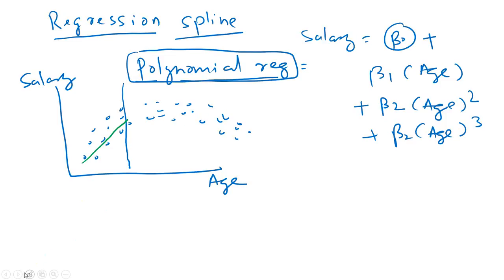In the second section, the data is more of a constant — parallel to the x-axis — so you can fit a straight line to this data as well. The third segment is a downward-sloping line, so we can fit a straight line here again. This would fit better than simply fitting a single polynomial equation to the entire data.